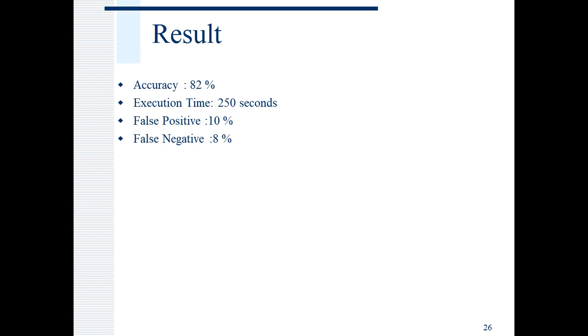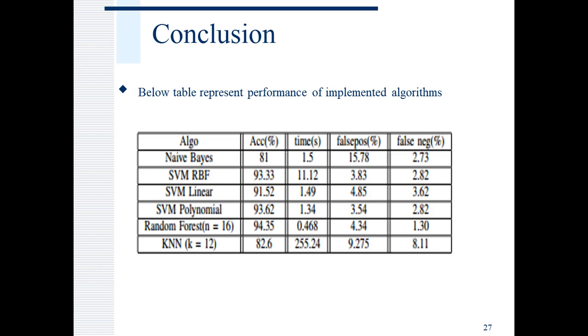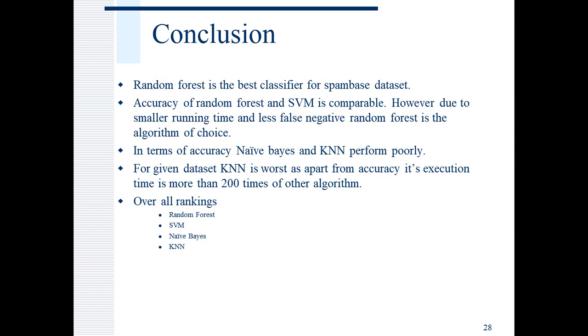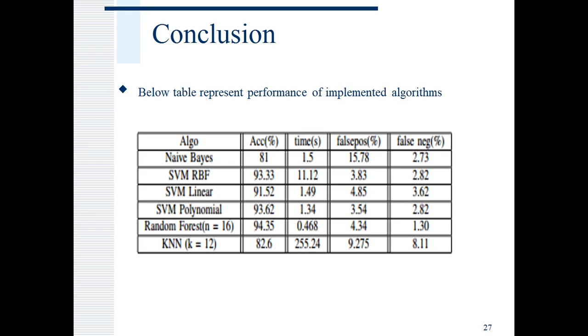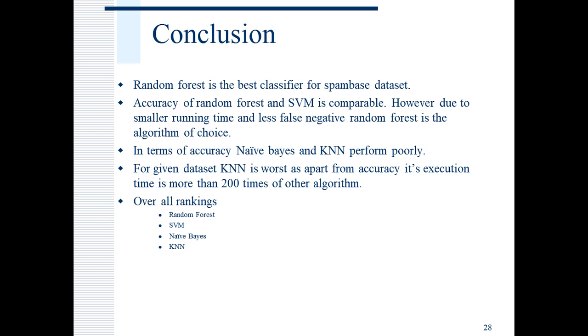Next, I have compared and concluded. Test results for all the algorithms are tabulated here. From this, we can conclude that random forest is the best classifier for spam base dataset because it results in best accuracy, best running time and lowest false positive and false negative. However, accuracy of random forest and SVM is comparable. However, due to smaller running time and less false negative, random forest would be our algorithm of choice.